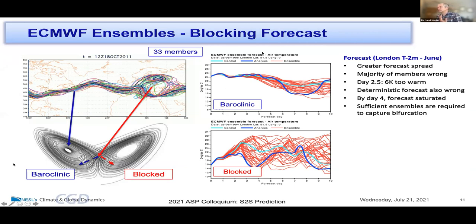This is a 10-day forecast for London, showing ensemble members, the deterministic, and analysis. At least through day six they're all in good agreement for surface temperature in baroclinic-type regimes. But in blocked scenarios, by day two there's already a lot of disagreement among the members. Even the high-resolution deterministic one is of order six Kelvin wrong by day two and a half — along with many of the ensembles. This is a key example where you really need to understand the spread. We're thinking about S2S prediction of blocking, but already at day three you can see the challenge.